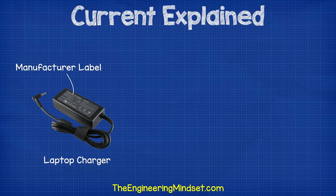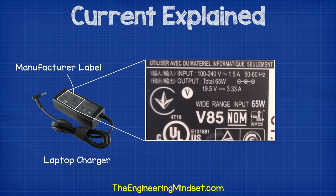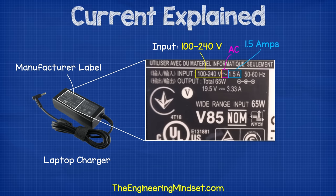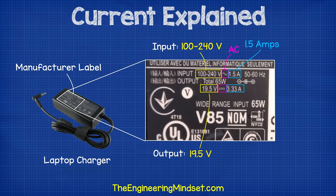If you look on the plugs of your electrical devices, you should find labels from the manufacturers which tell you what the product is designed to handle. For example, this laptop charger tells us that for the device to work, it needs an input of between 100 and 240 volts and 1.5 amps of AC or alternating current. The charger will then convert this to give an output of 19.5 volts and 3.3 amps of DC or direct current.